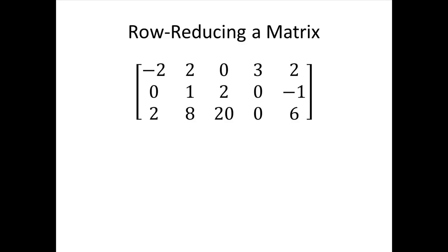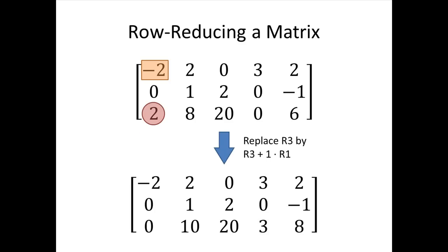Here's our new matrix. The leading entry in the first row — we call that a pivot. These leading entries that form the echelon formation are called pivots, and any column that contains a pivot is called a pivot column. Now that first column needs to have zeros below that leading entry — that was one of our rules for echelon form. So the two in the third row, first column needs to become a zero. We can make that happen using the replacement operation: replace row three by row three plus row one. The negative two in row one will cancel out with the two in row three, giving us our new matrix.